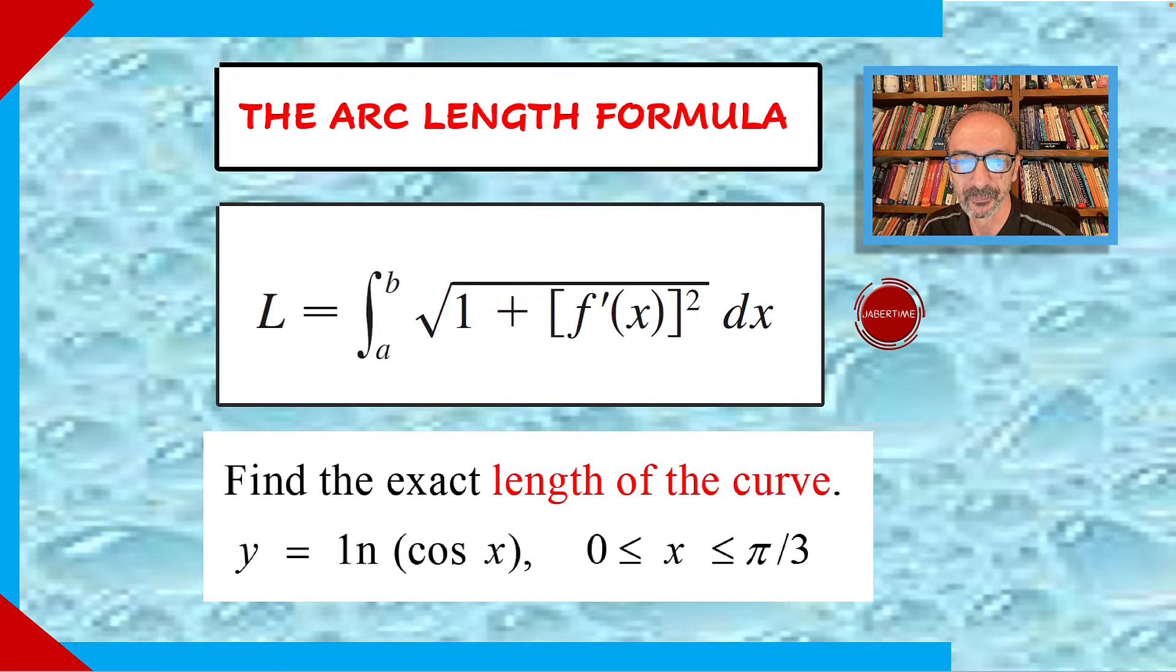We're going to use the arc length formula to find the exact length of the curve y equals ln cosine x, where x goes from 0 to pi over 3, which is equivalent to 60 degrees.